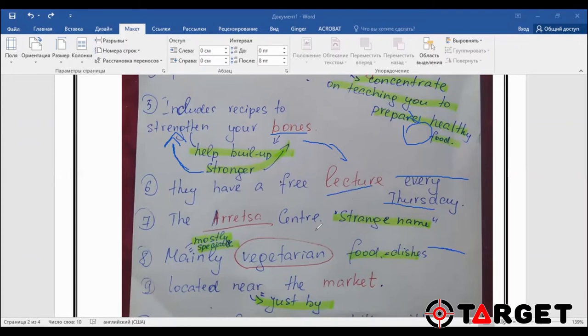Number seven, the Aretha Center. How did I know that this address will be definitely spelled? Because he started with strange name. So if it's strange, it will be definitely spelled. This spelling is all 100% on you. You must be really careful listener. So the spelling will be A-R-R-E-T-S-A, Aretha.